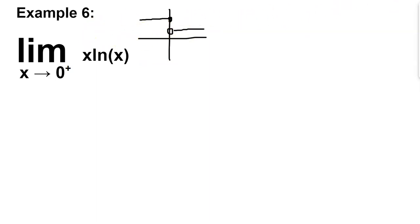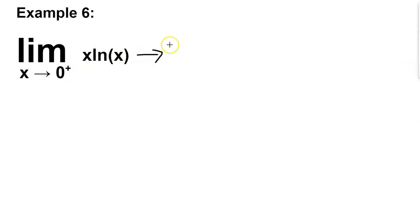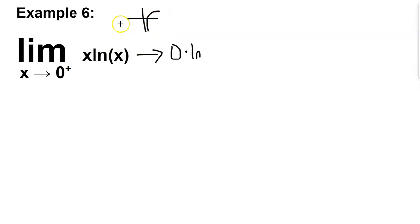Let's get into solving this limit. The first step, as for any limit problem, is to evaluate the limit by substituting in the value of x. If we were to do that, we would get 0 times natural log of 0 plus — and this is why the plus is so important, because natural log of 0 does not exist. Approaching 0 from the right side, ln of 0 plus goes to negative infinity, so this evaluates to 0 times negative infinity, which is one of the indeterminate forms.